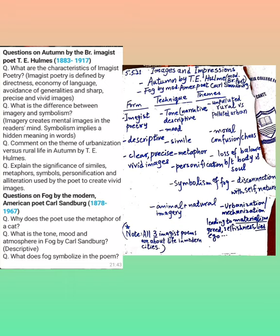Before we begin with the poems, we first need to have an introduction of imagism. Imagism is a literary movement in early 20th century literature. Imagism is also given the credit for paving the way for the modernist movement, which spans almost the main part of the 20th century. T.S. Eliot is the most important, well-known modernist poet.